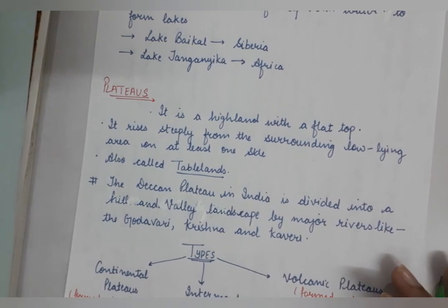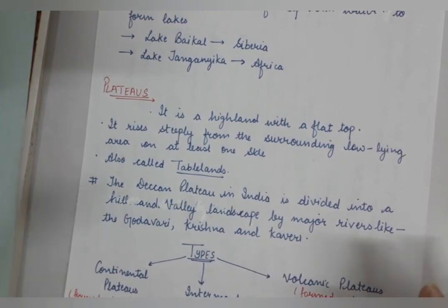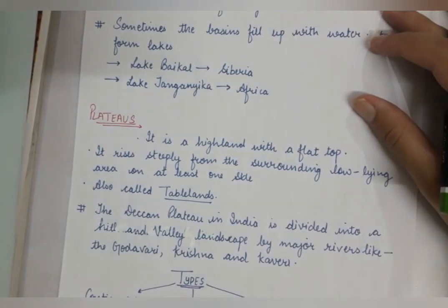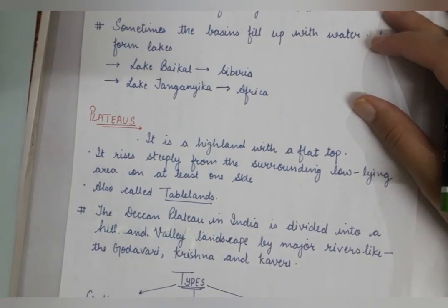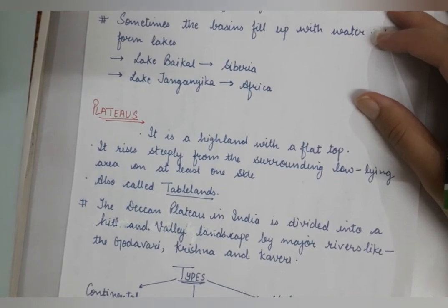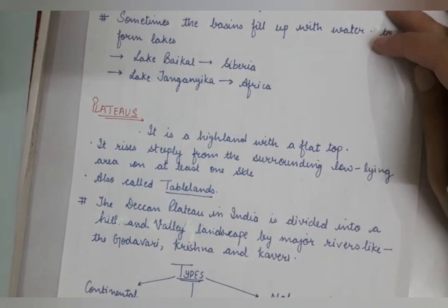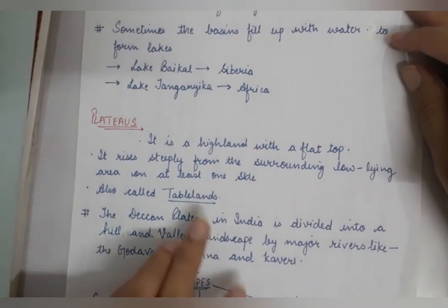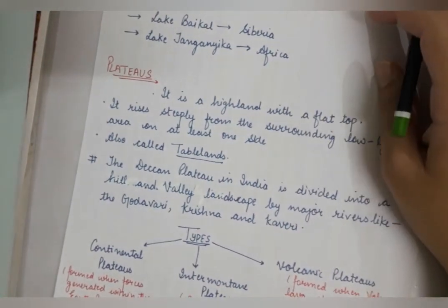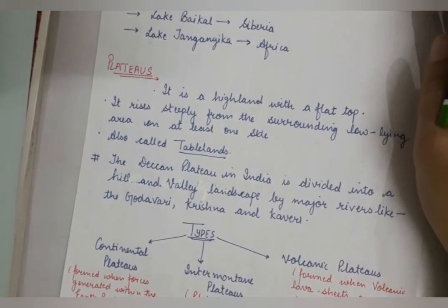Talking about plateaus — imagine a table. The table top is high up from the floor. The plateau is steeper from at least one side and is at some height. The top is like a table top, so plateaus are also known as tablelands. The Deccan Plateau in India is very important — it is divided into both hill and valley landscape.